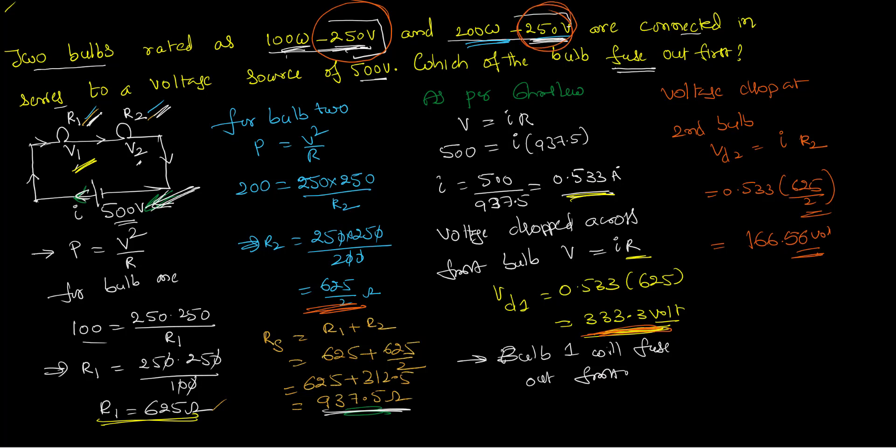So that's a quite reasonable voltage because the second bulb is designed for 250 volts but the voltage supplied is only 166.56 volts. The second bulb can withstand the voltage drop that is happening through it. But the first bulb, it's too much for it, it can't bear it, so it will fuse out first. So who will fuse out first? The question asked is the first bulb will fuse out.